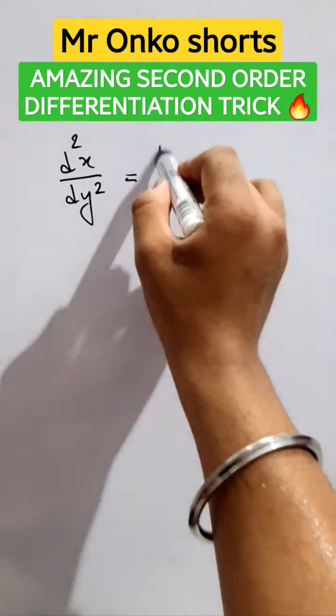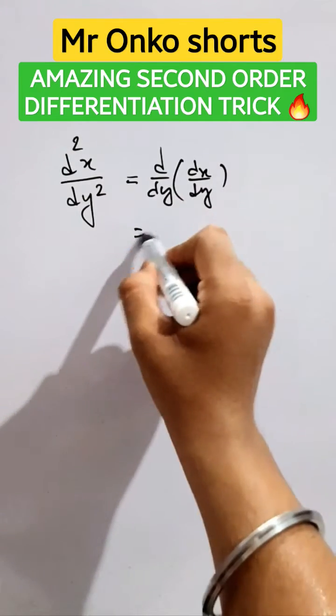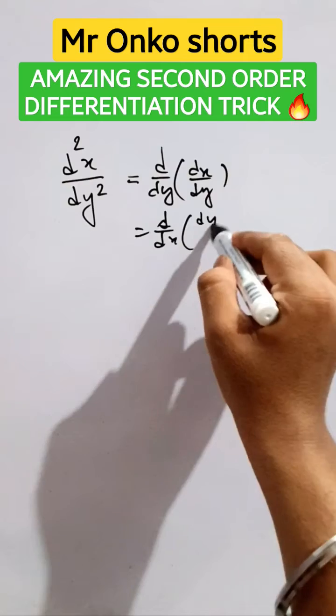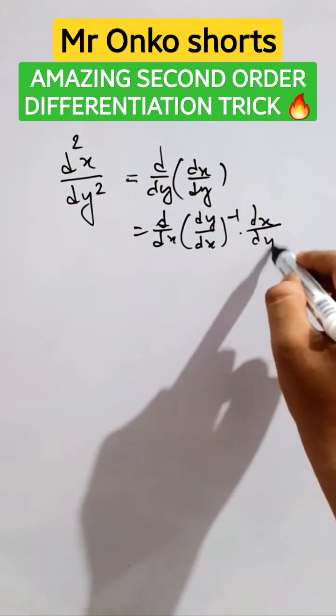So take d²y/dx². Now manage it as d/dx of dy/dx. It is dy/dx raised to the power minus one, and this has been managed as dx/dy.